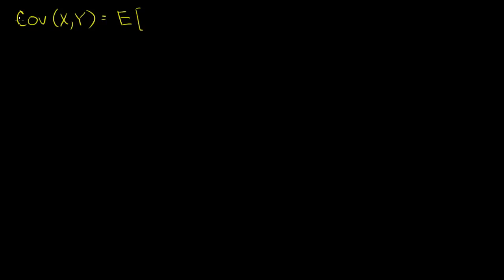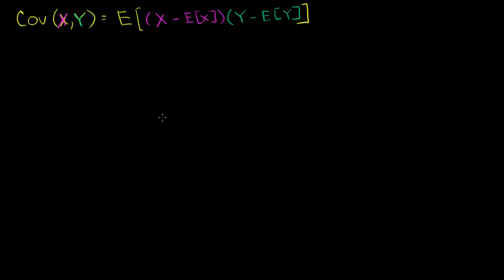So let me just write that down. It's the expected value of random variable x minus the expected value of x — you could view this as the population mean of x — times the distance from y to its expected value, or the population mean of y.